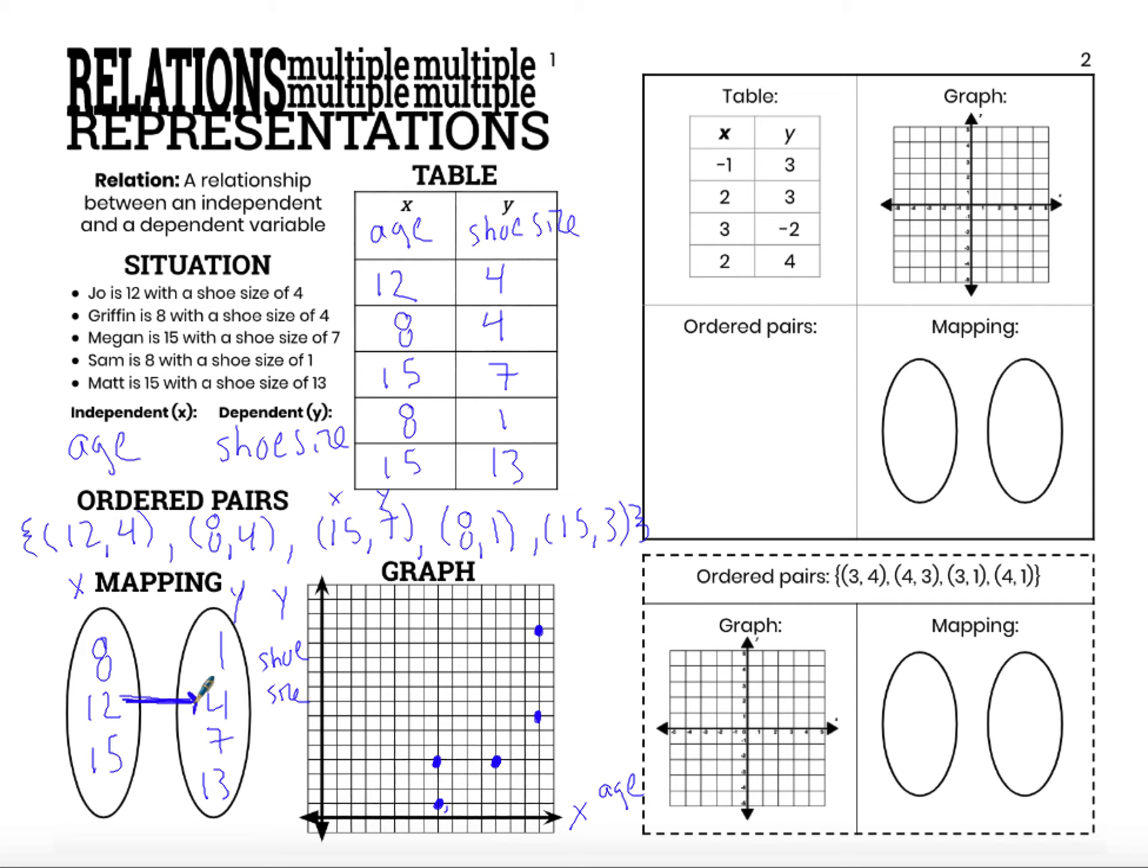But really, the arrow shows me that the 12 is my independent, and it gives me a dependent variable of 4. It shows that the 4 depends on that 12, or that the 12 determines the 4. So this arrow from 12 to 4 shows me my first pairing of independent and dependent, age of 12, shoe size of 4.